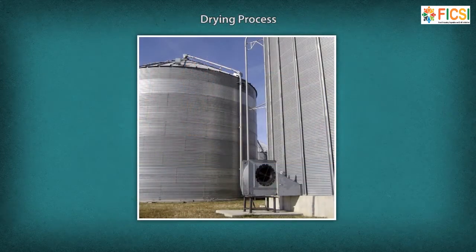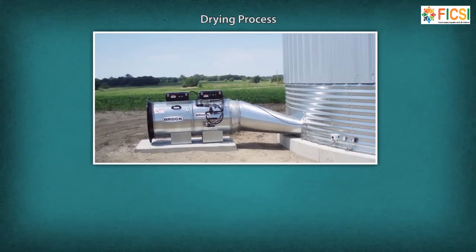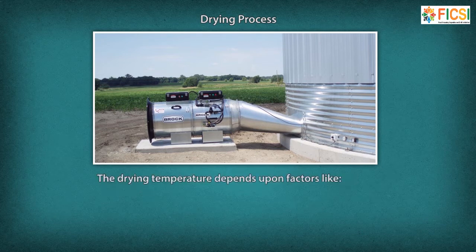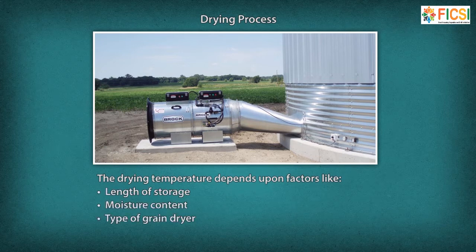Drying Process: Drying of grains is necessary before storing them. Drying can be done in various ways such as natural drying, dryation, in-storage cooling, and heated air drying. The grain mill operator adjusts controls of the dryer to set the temperature and time to dry the conditioned grain. The drying temperature depends on factors like length of storage, moisture content, type of grain dryer, and end use of the grain.